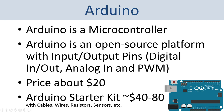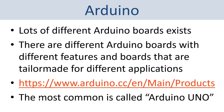It has a USB connector and external power supply. The price is about $20 for this Arduino Uno, but you can also get different Arduino starter kits for your projects. Lots of different Arduino boards exist — these different boards have different features and are tailor-made for different applications. You can find an overview of the different boards at the Arduino website, but the most common one and the device we are going to use in this tutorial is the Arduino Uno.